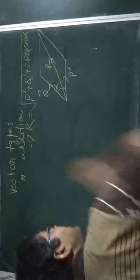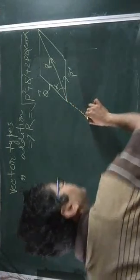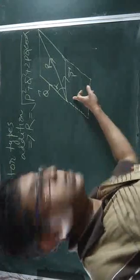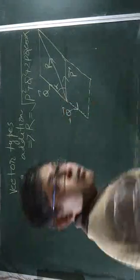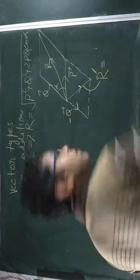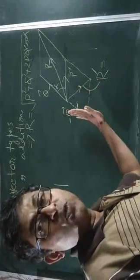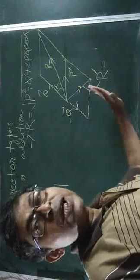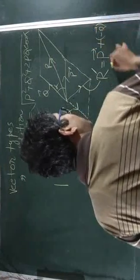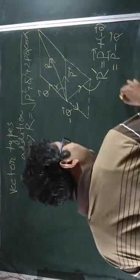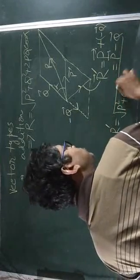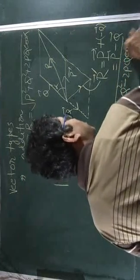This is the value of the resultant. Vector subtraction occurs when one of the two vectors is reversed. If we then add these two vectors, this determines the difference between the two vectors. So p vector plus minus q vector results in p vector minus q vector, and the value is p squared plus q squared minus 2pq cos alpha.